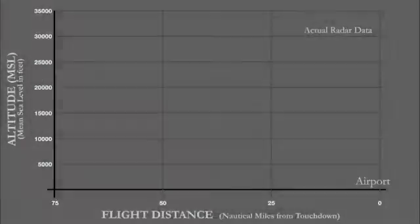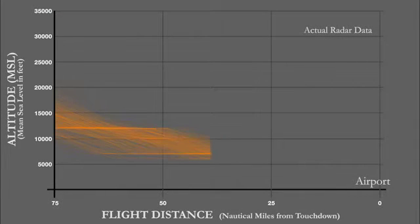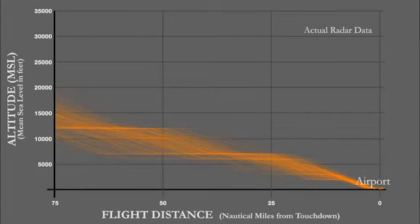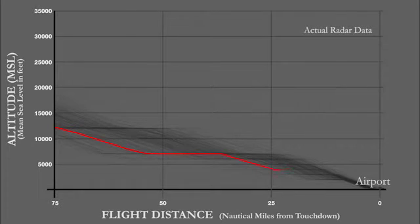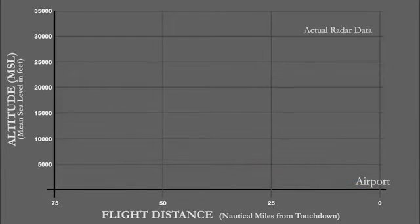A traditional descent is like walking down a flight of stairs. Based on air traffic control instructions, the pilot descends and applies speed brakes, then levels off and powers the engines up, then descends and applies speed brakes again. The cycle repeats itself until the plane is on its final approach to an airport.